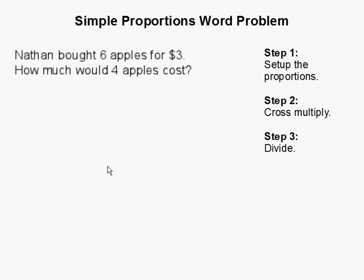This simple proportion word problem goes: Nathan bought six apples for three dollars. How much would four apples cost? To solve this problem, we are going to apply proportions.